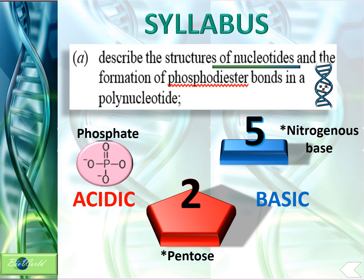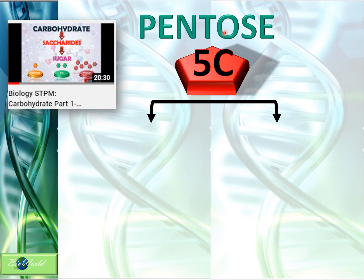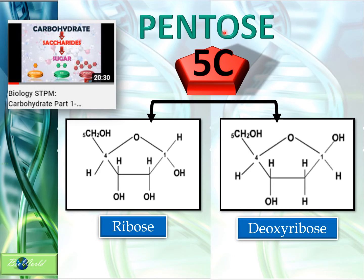Let's have a look at the pentose first. You can refresh your memory on pentose by viewing my video on carbohydrate part one. Pentose is a carbohydrate with five carbon atoms. Examples of pentose connected to nucleotides are either a ribose molecule or a deoxyribose molecule. Both molecules have a carbon 1, carbon 2, carbon 3, carbon 4, and a carbon 5. However, the difference between ribose and deoxyribose is at carbon 2. For ribose, carbon 2 has a hydroxyl group, whereas for deoxyribose, carbon 2 has only a hydrogen.